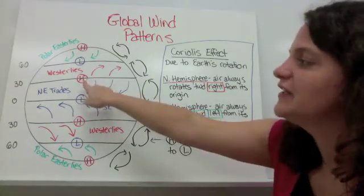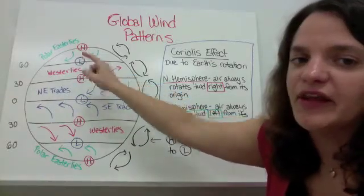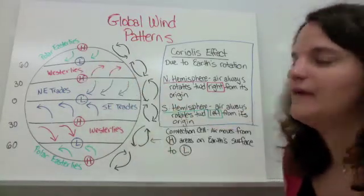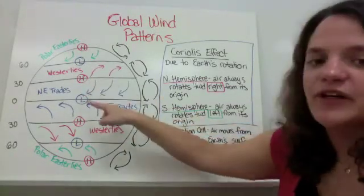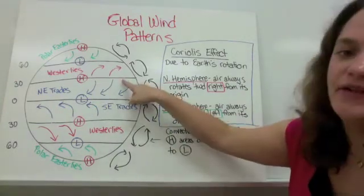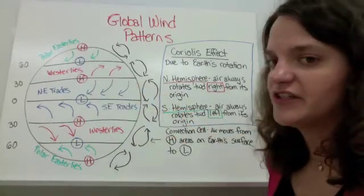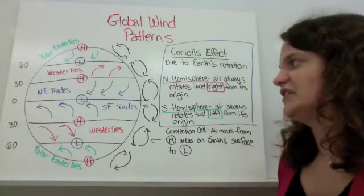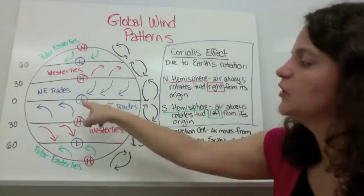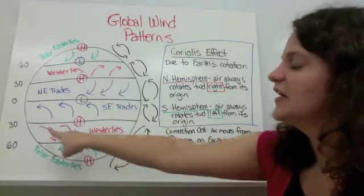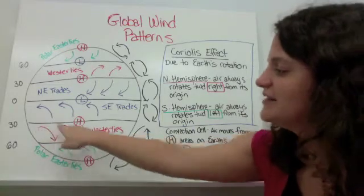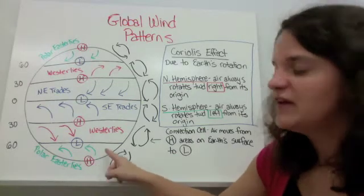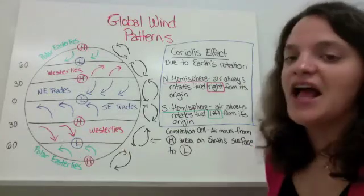From the high pressure around 30 degrees north, winds blow toward the low pressure at 60 degrees north — those are called westerlies, originating in the west. Between 30 degrees north and the equator are the northeast trade winds, blowing toward the low pressure center at the equator. In the southern hemisphere it's reversed: southeast trades blow toward the equator, westerlies originate at 30 degrees south blowing toward 60 degrees south, and polar easterlies blow from the poles toward 60 degrees south.